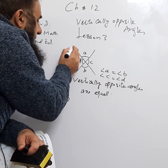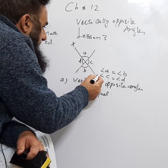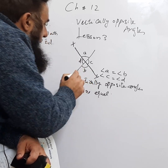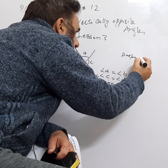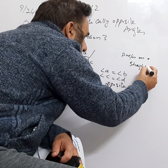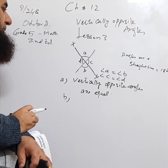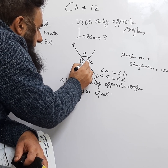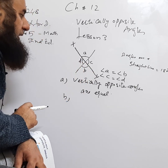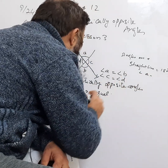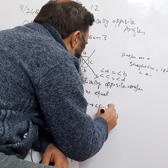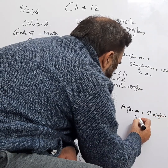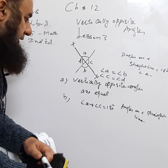The second point is about a straight line. If we have a straight line, say line XY, we know that angles on a straight line are equal to 180°. This was our first topic in chapter 12. From one end to the other, angles A and C together form a semicircle, so angle A plus angle C is equal to 180° because they are angles on a straight line.